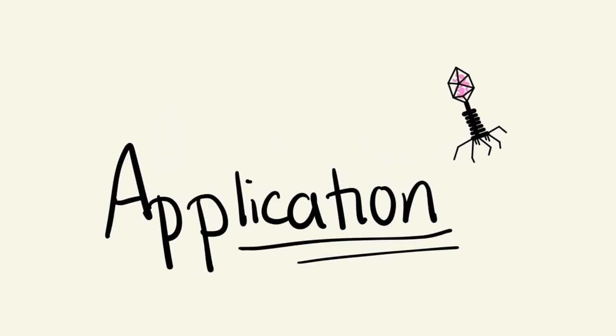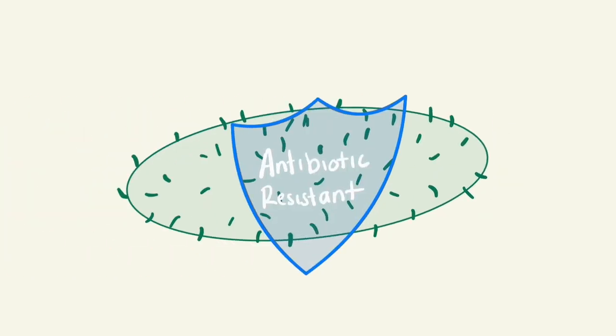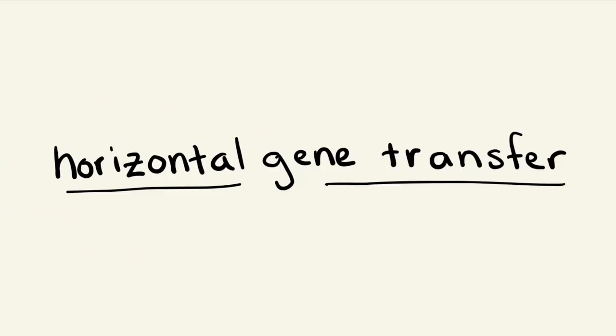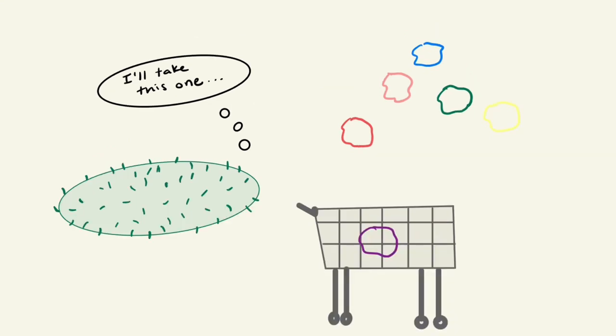Now that we know how phages work, we will take a look at how phages can be applied to the antibiotic resistance crisis. Antibiotic resistance is primarily spread through horizontal gene transfer, which is when bacteria gain new genes through plasmids either from other bacteria or from uptake in the environment around them.